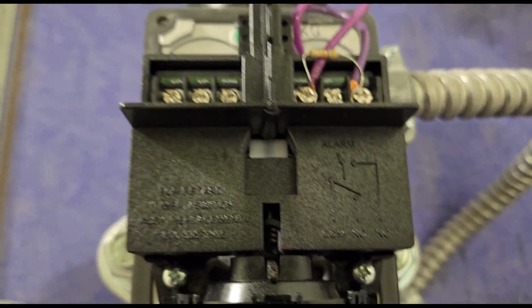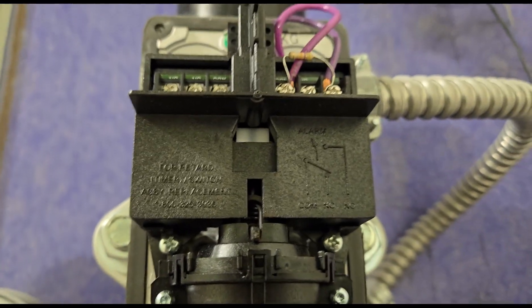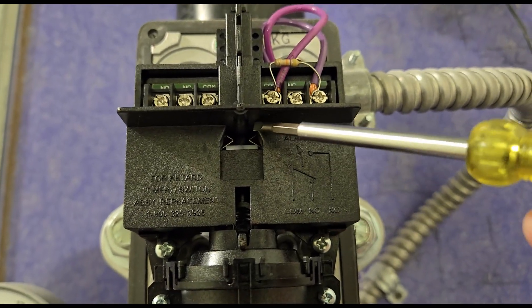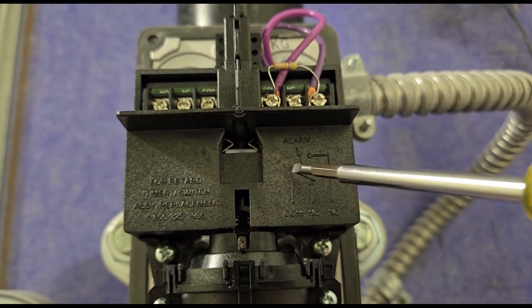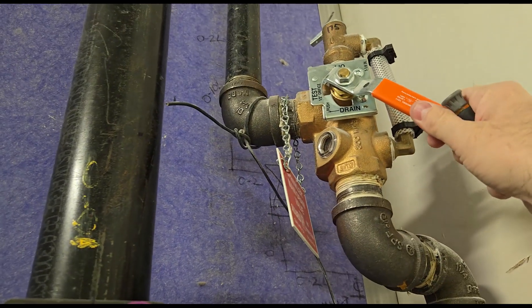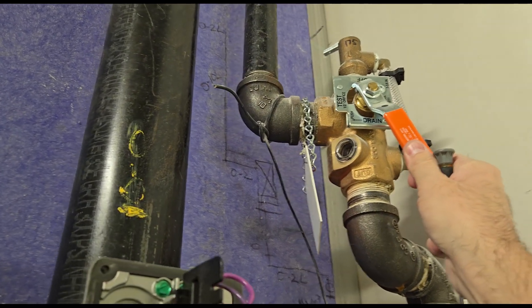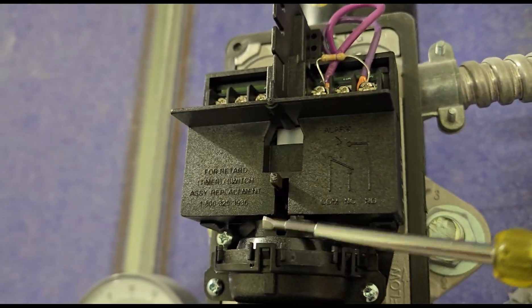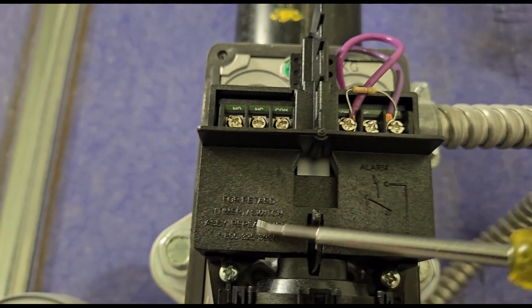That was the cover dropping. Alright, so, oh, there it goes. So it just activated. You see the white part dropped down. So now the switch is active. And we're still flowing, so the lever's down. So we're going to put it back. And you see the lever's already back up and the plunger reset.